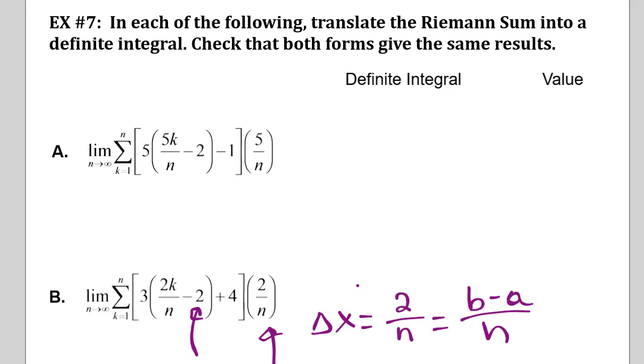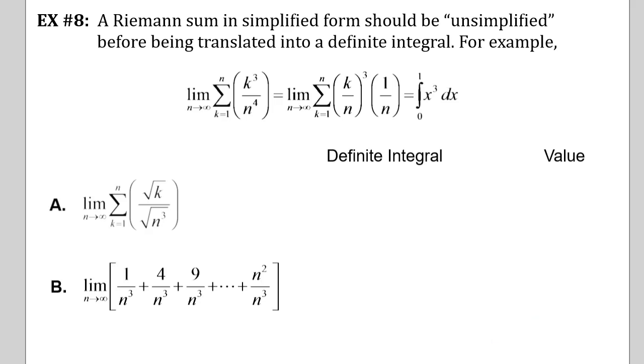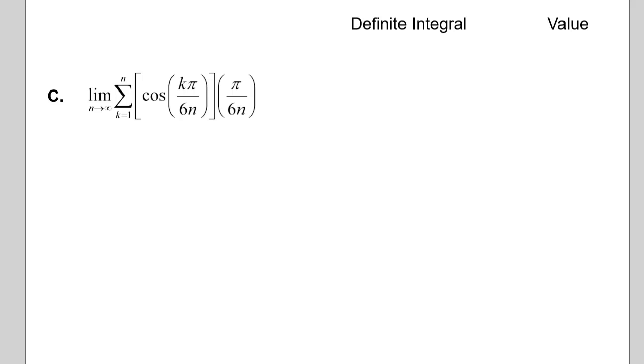I believe there's an example C. Yes. Yes, there it is. Okay, so here's C. And we're looking at the limit as n approaches infinity of the summation of k equals 1 to n of cosine of k pi over 6n times pi over 6n. Okay.